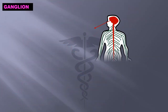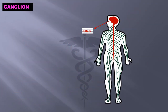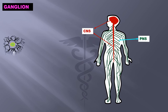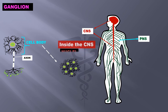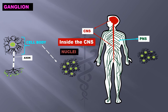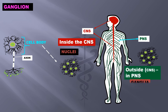Let us start with the nervous system. In our body we have the central nervous system, which is formed by the brain and spinal cord, and the peripheral nervous system. A single cell of the nervous system has an axon and a cell body. When these cell bodies group together inside the central nervous system they are called nuclei. When they group together outside the central nervous system, in the peripheral nervous system, they are called ganglia.